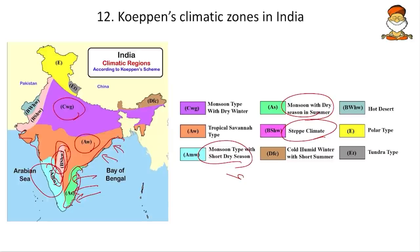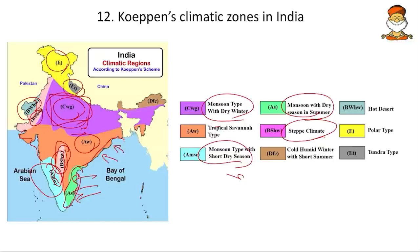CWg means monsoon type with dry winter — the hardcore monsoonal climate with complete dryness in March, maximum rainfall in July, and very cold winters — experienced in UP, Bihar, and parts of Rajasthan. Moving towards Rajasthan, grassland-type climate occurs. In the Kashmir, Uttarakhand, and Himachal region, E-type climate (Tundra and Polar) is experienced. DFc means cold humid winters with short summers — summers are short because the Bay of Bengal branch of monsoon arrives early here.